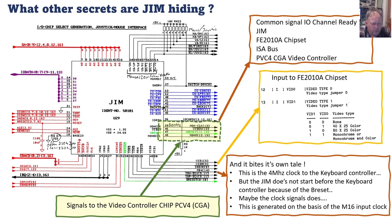Other signals to the video controller chip include the mono clock, something called vid end or video enable, and MONO — which probably tells the CGA chip if it's color or monochrome output — as well as the V reset covered earlier. Now we are going to start measuring to see if we can reveal more mysteries from the GYM chip. I have now measured most of the pins and hopefully established that there are no missing connections between the GYM chip and the other chips it should connect to.